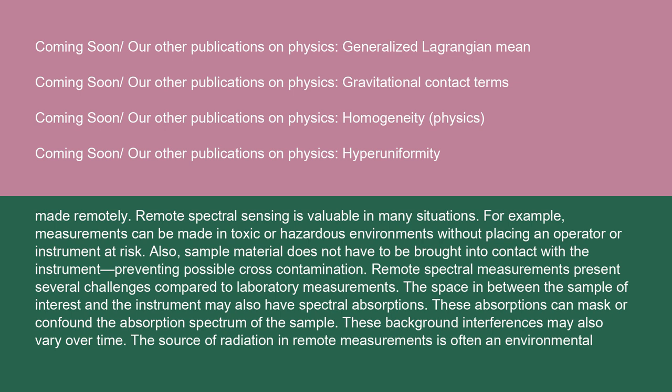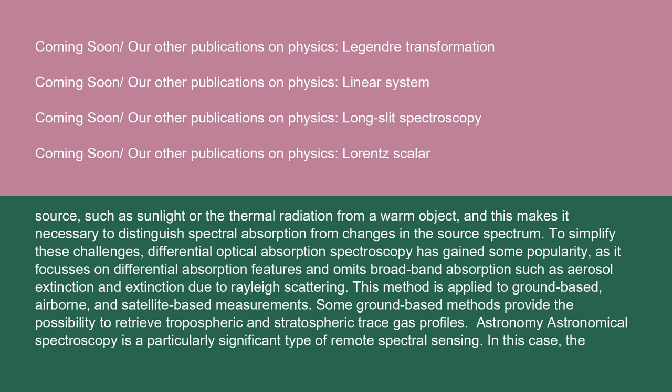Remote spectral measurements present several challenges compared to laboratory measurements. The space between the sample of interest and the instrument may also have spectral absorptions, which can mask or confound the absorption spectrum of the sample, and these background interferences may also vary over time. The source of radiation in remote measurements is often an environmental source such as sunlight or thermal radiation from a warm object, making it necessary to distinguish spectral absorption from changes in the source spectrum. To simplify these challenges, differential optical absorption spectroscopy has gained some popularity, focusing on differential absorption features and omitting broadband absorption such as aerosol extinction and extinction due to Rayleigh scattering. This method is applied to ground-based, airborne, and satellite-based measurements, and some ground-based methods provide the possibility to retrieve tropospheric and stratospheric trace gas profiles.